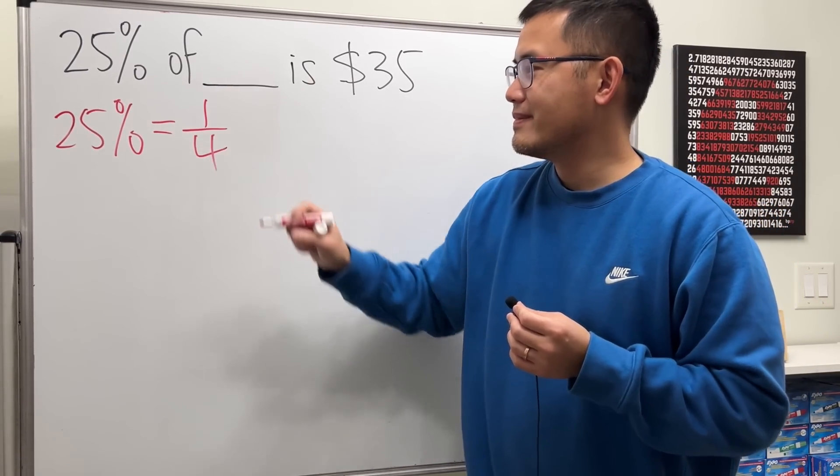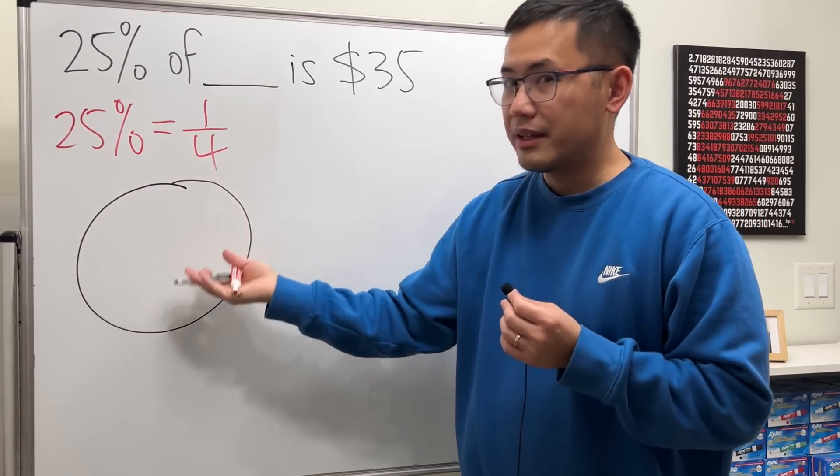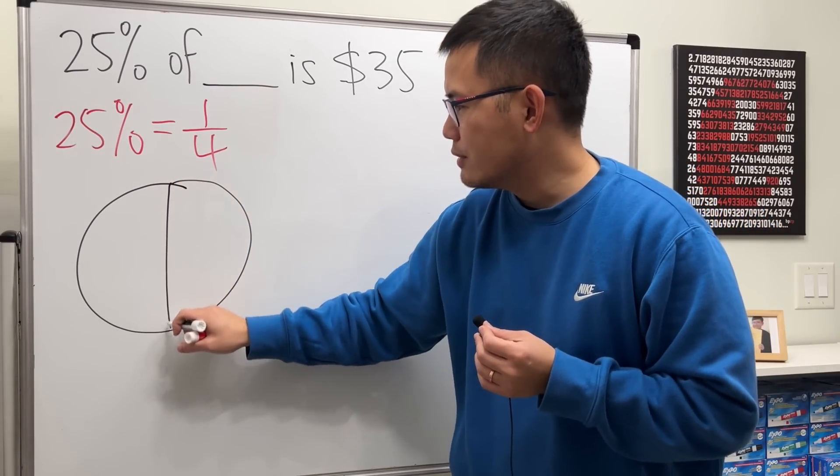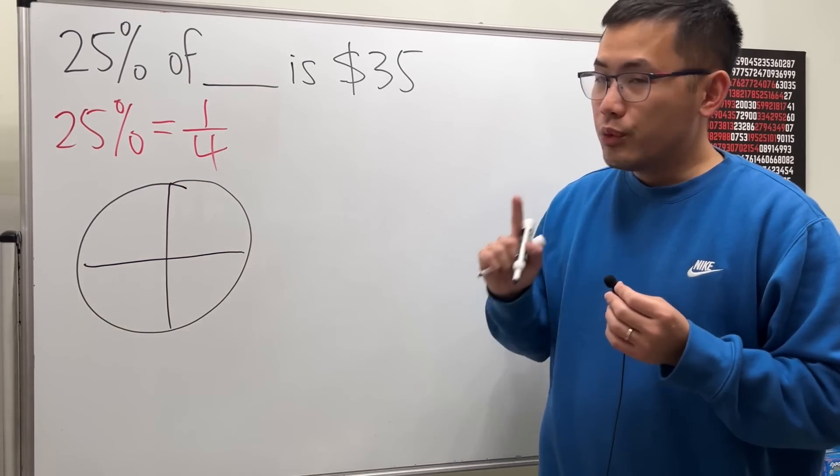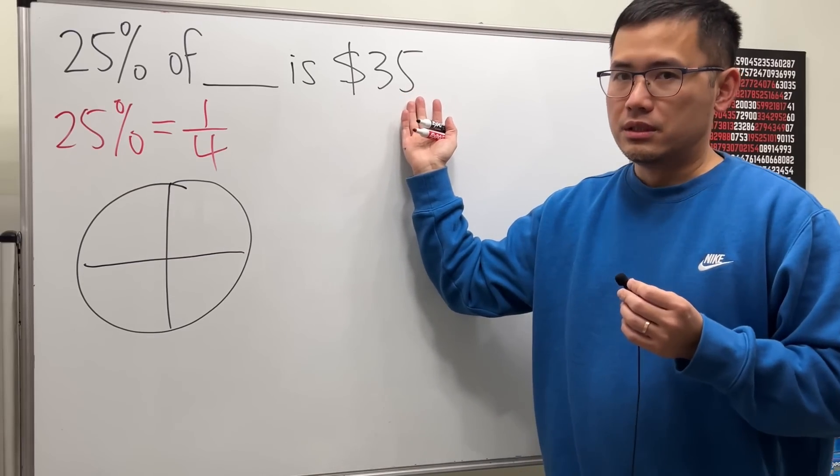If you look at a picture like this, I'm going to cut this into four pieces just like a waffle, and you know that a quarter of the whole thing is $35.